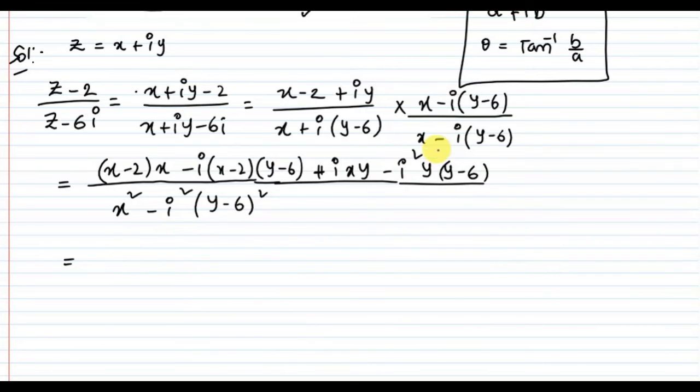Separate real and imaginary parts. Since i² equals minus 1, the minus becomes plus. So we get (x - 2)x + y(y - 6) plus i times [xy - (x - 2)(y - 6)].